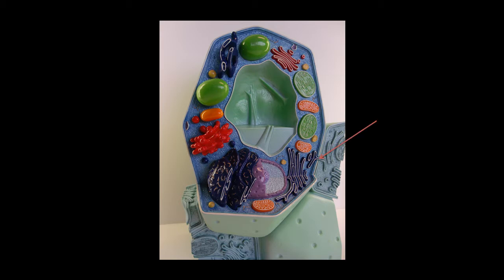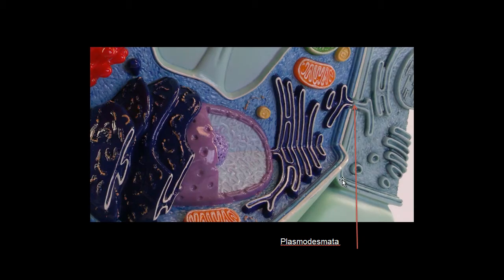This is a plasmodesmata. It's a contact structure that connects two neighboring cells, allowing substances to move back and forth through these small channels. If we look a little closer, we can see the actual tube here adjoining the interior of two cells.